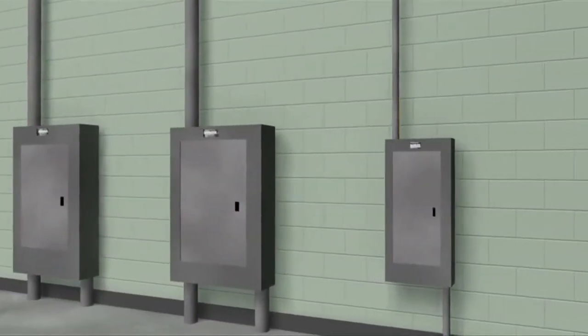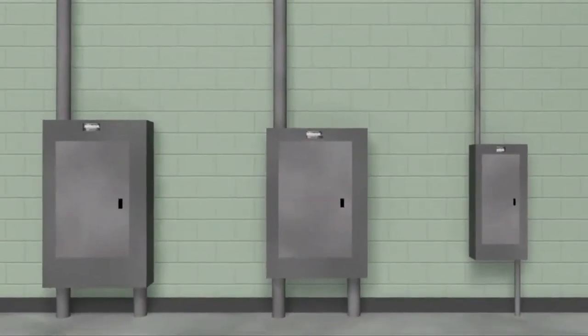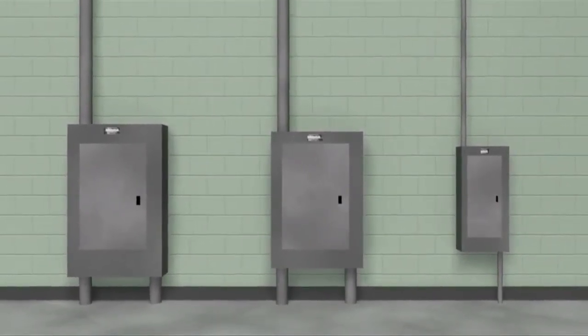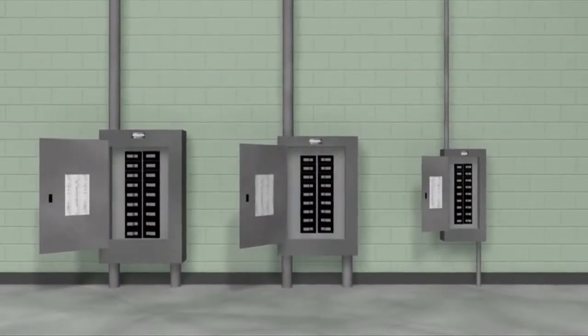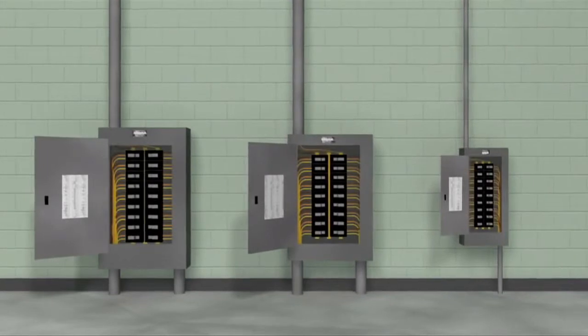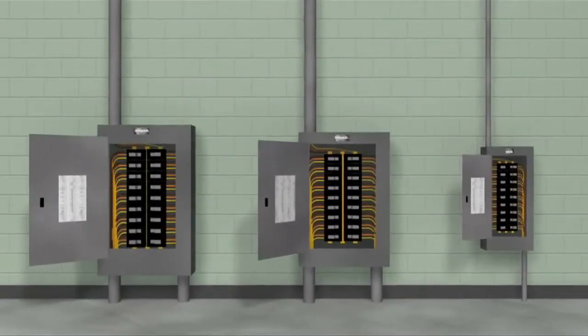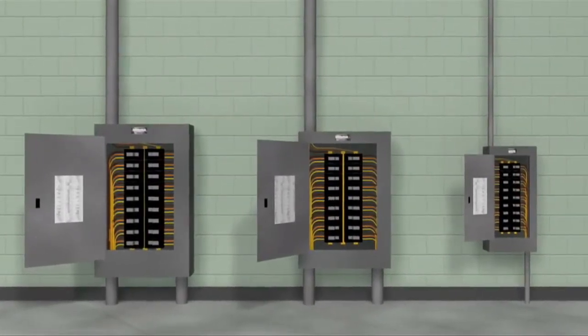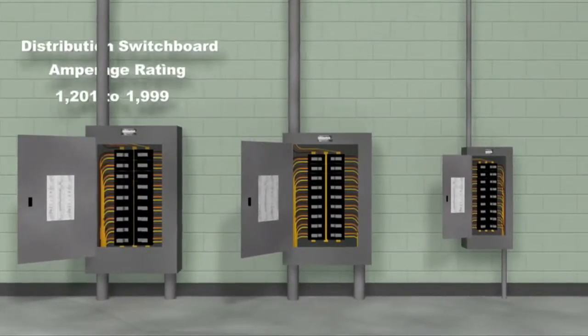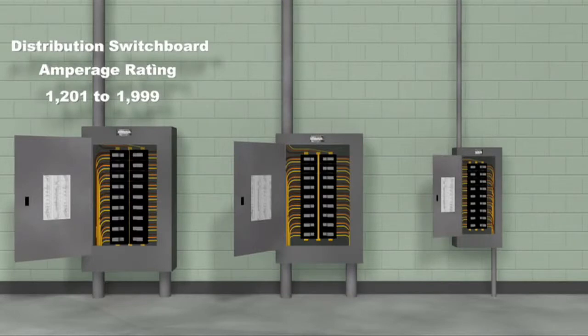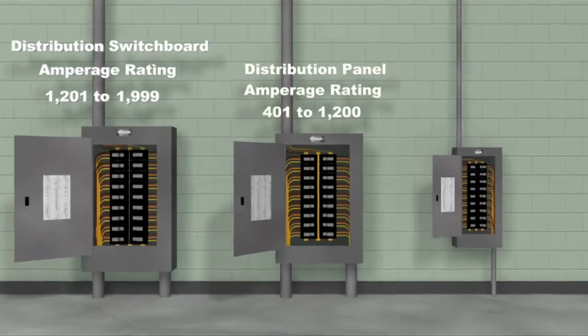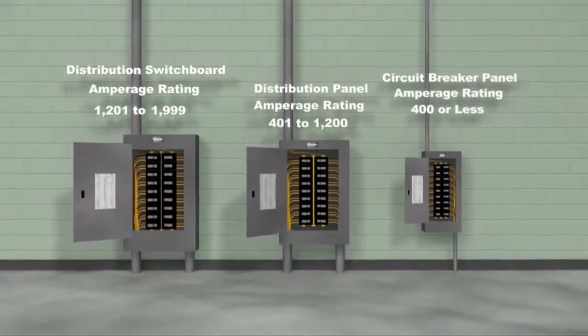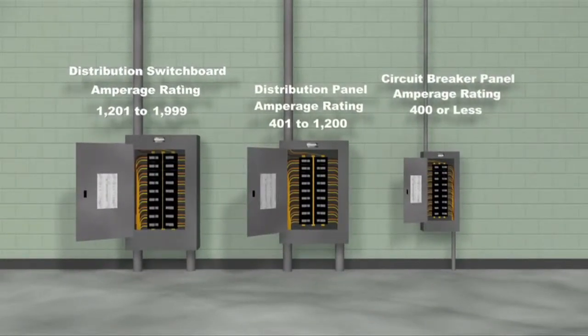A distribution switchboard, a distribution panel, and a branch circuit breaker panel all have the same functionality. They can contain many circuit breakers distributing voltage to all areas of the facility. What differentiates them from each other is their amperage rating. Distribution switchboard is an electrical panel with an amp rating between 1,201 and 1,999. A distribution panel has an amperage rating of 401 to 1,200. A branch circuit breaker panel has an amperage rating that is equal to or less than 400 amps.